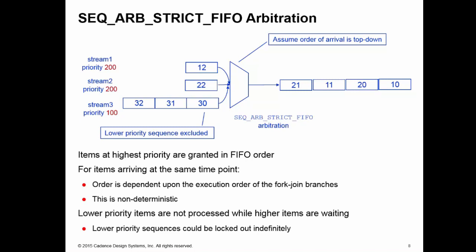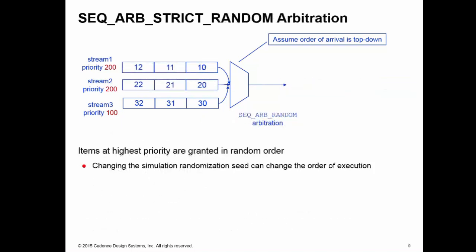The second priority arbitration mechanism is strict random. Now items at the highest priority are not granted in arrival order but in random order. Because this is random, changing the simulation seed can change the execution order of sequence items. Again, I have 3 items waiting to be served by the sequencer, but items from stream 1 and 2 have higher priority. So I'm going to randomly select between one of those two, perhaps take the 20. But then stream 2 immediately provides the next data item, 21.